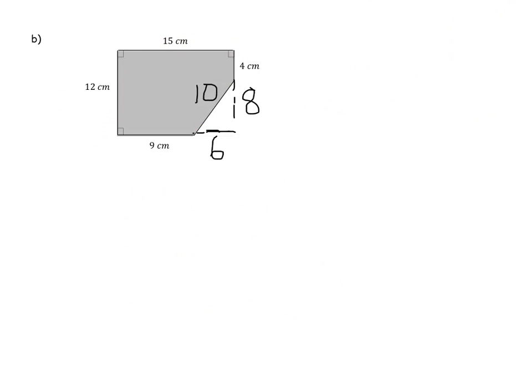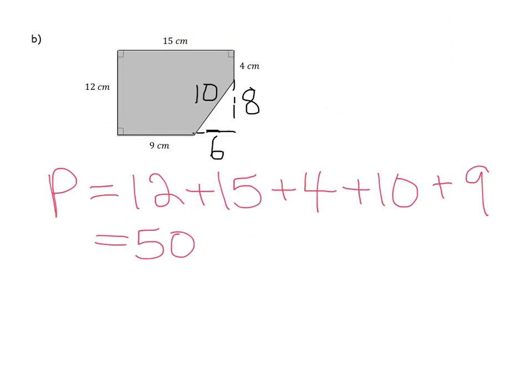So really quickly, let's just go for our perimeter. We would just write out P equals and we'll add up all the sides. We have 12 plus 15 plus 4 plus 10 plus 9. And that's going to give us a nice even 50 centimeters.